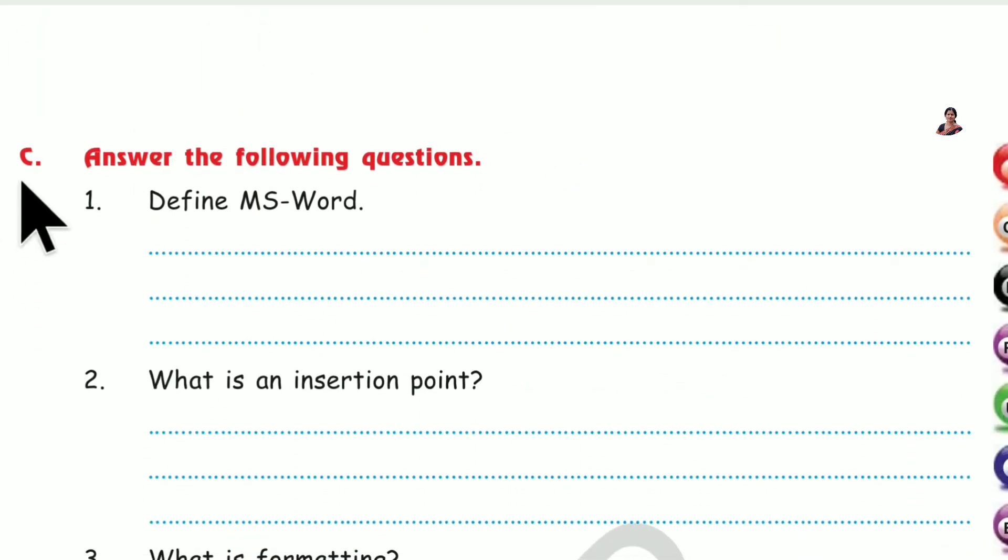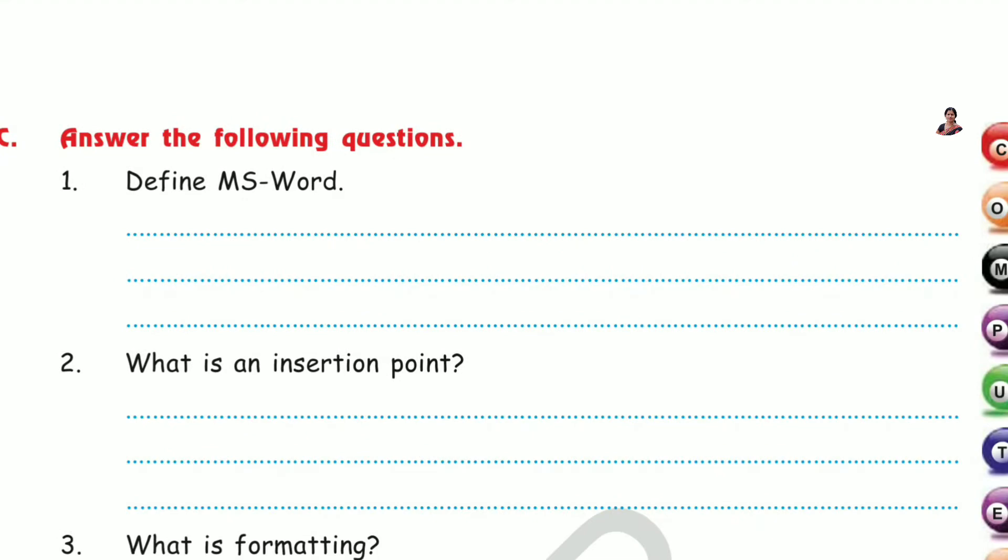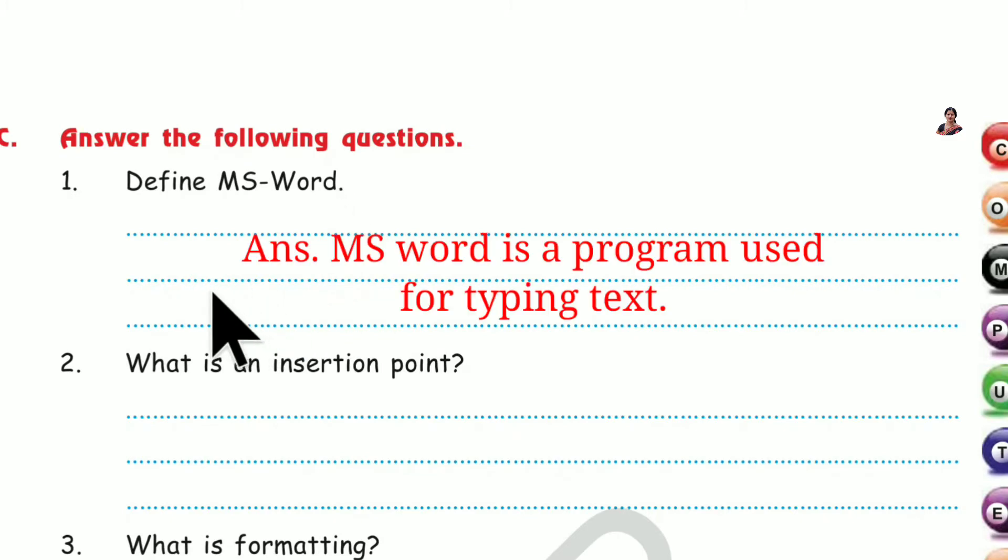Now answer the following questions. Number 1. Define MS Word. What is MS Word? MS Word is a program used for typing text. Simple. MS Word is a program used for typing text.